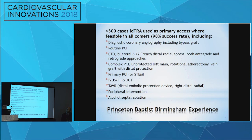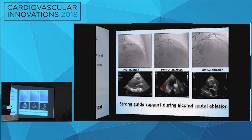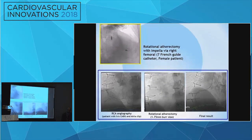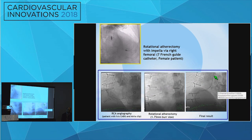That placement is through the right distal radial access. We also have strong support in HOCM septal ablation using our setup with left distal radial access. Additionally, we performed complex PCI in both the left main and right coronary artery. One case demonstrates rotational atherectomy with a seven French catheter in a female patient who had Impella support from the right femoral access. The lower panel shows the RCA intervention — we did atherectomy and achieved a nice final result.